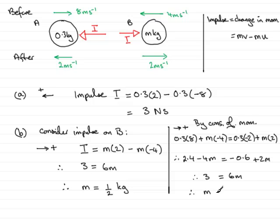And dividing by 6, we end up with M equaling 3 sixths, or half a kilogram again. So, either way, using impulse on B, or by the conservation of momentum, we get the final result that the mass is half a kilogram.